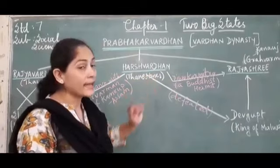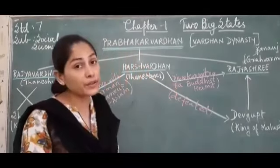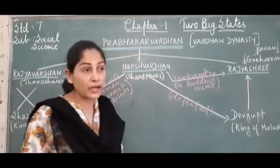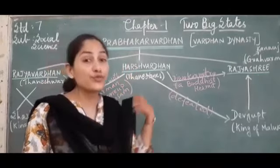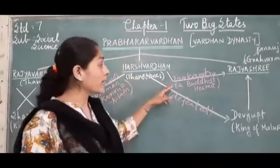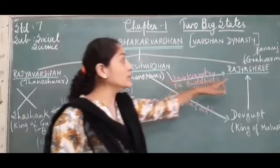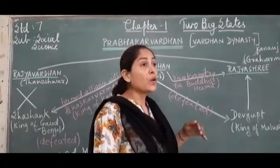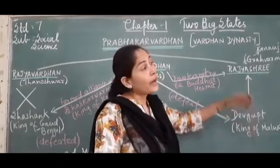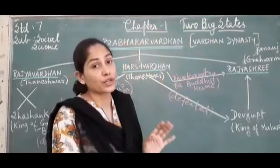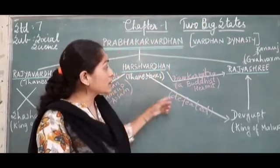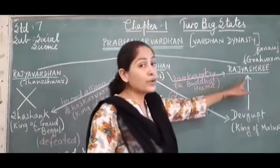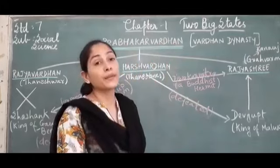He took help of Devakar Mitra, who was a Buddhist hermit, and the people who were living in the forest. He took help of these people and found Rajyashri. Rajyashri had escaped from the clutches of Devguta and fled into the Vindhya forest. Harshvardhan, with the help of Devakar Mitra and the forest people, found Rajyashri and stopped her from becoming a Sati.